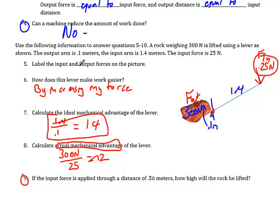Now, six, five, six, seven, eight, and nine, these are all questions about this lever. This lever has got a big rock sitting here, weighs 300 newtons, and it's lifted using this lever as shown. The output arm is 0.1 meters, so I went ahead and labeled that. Here it is.